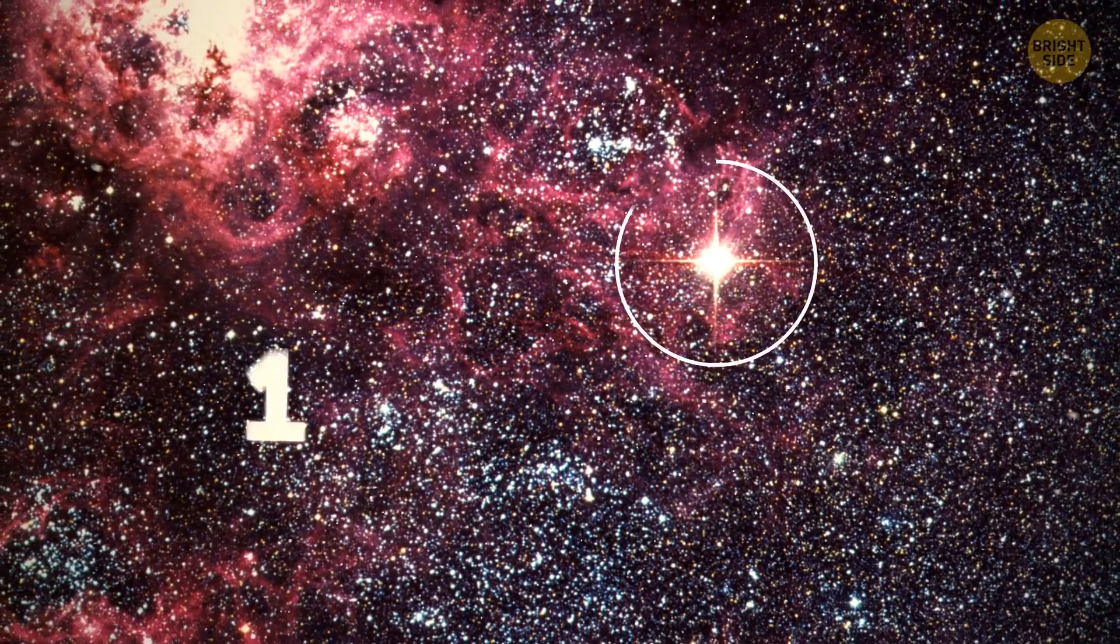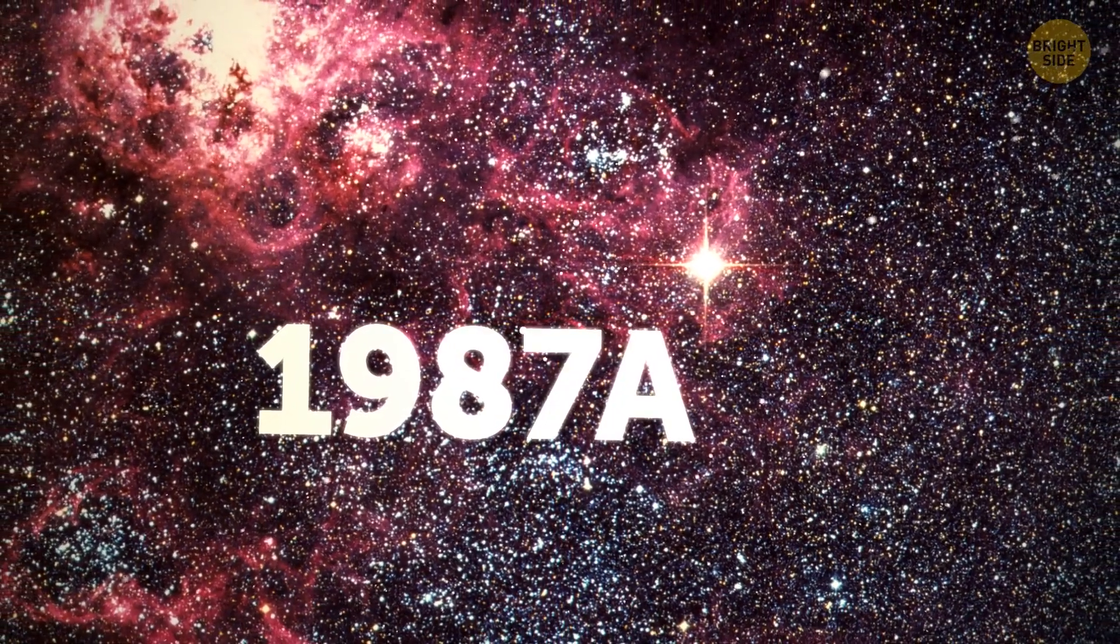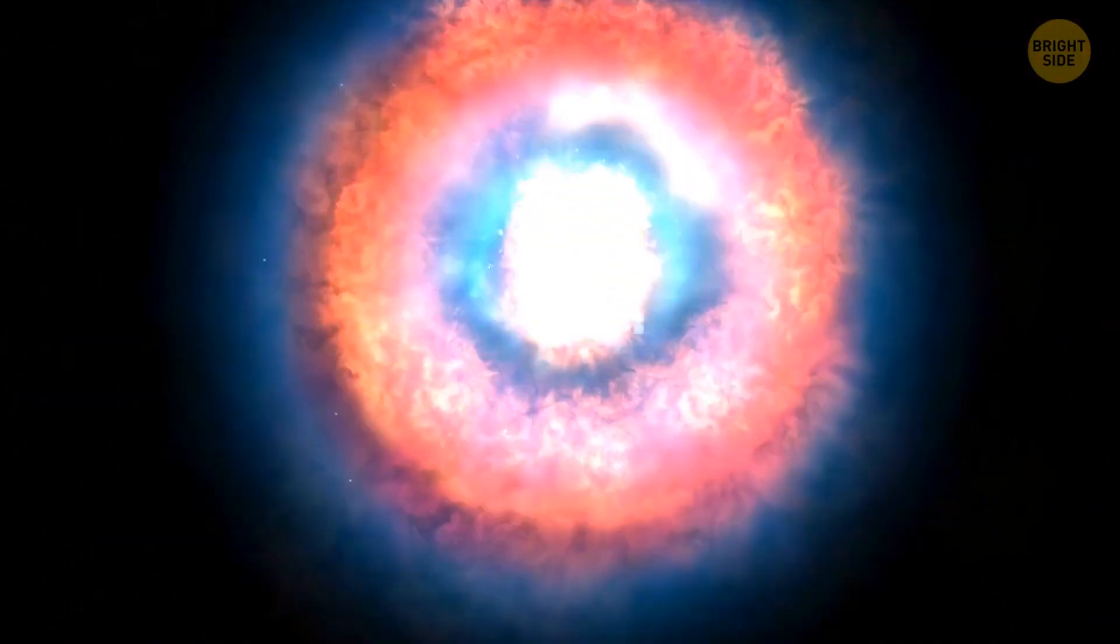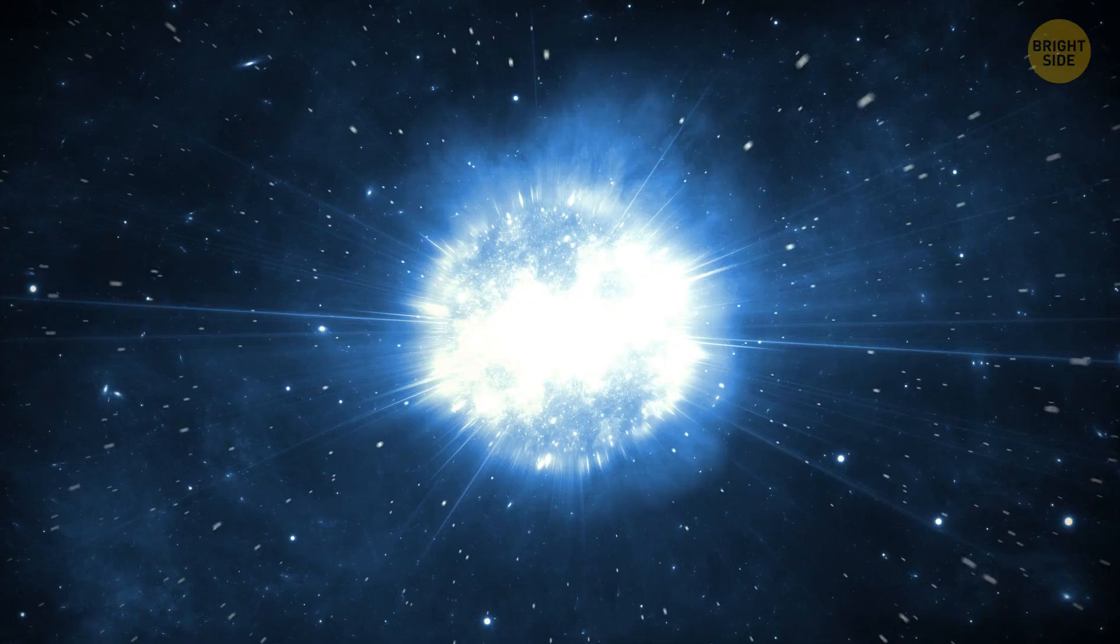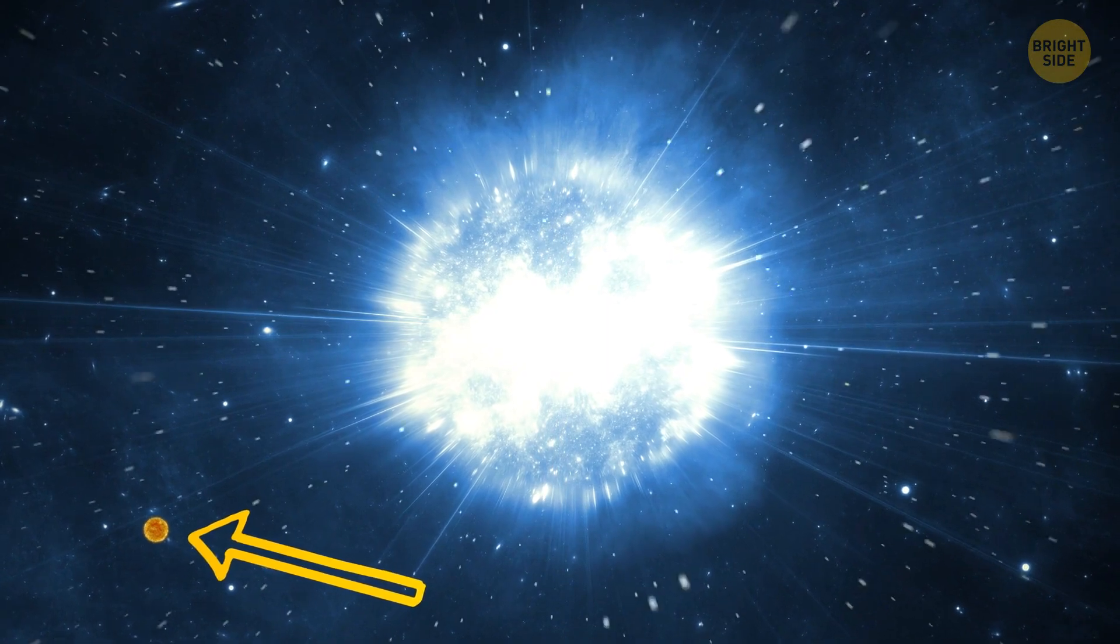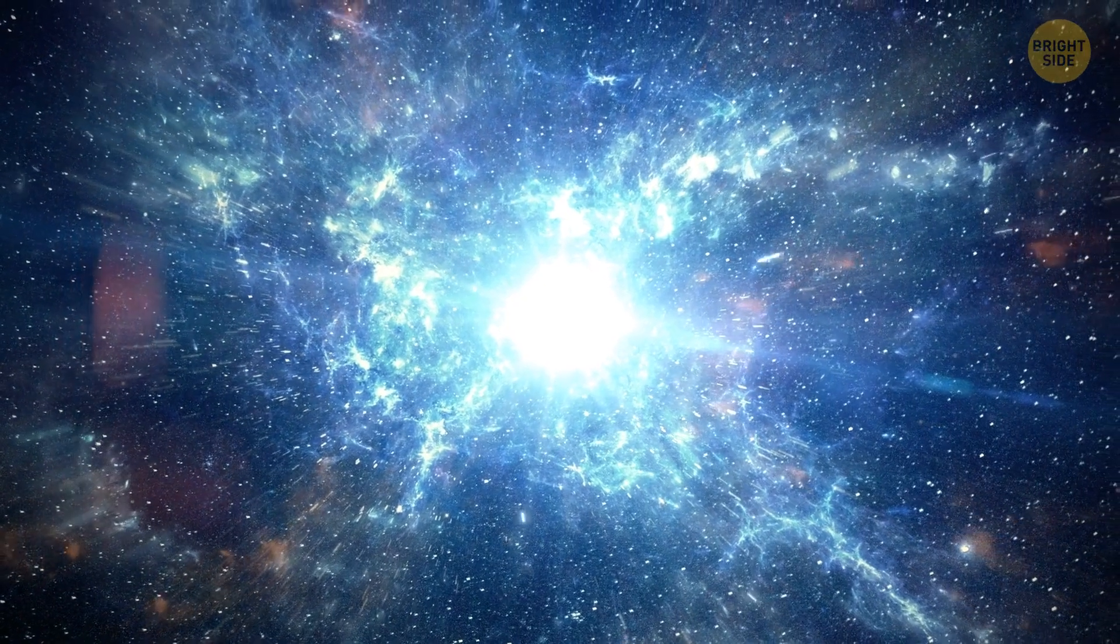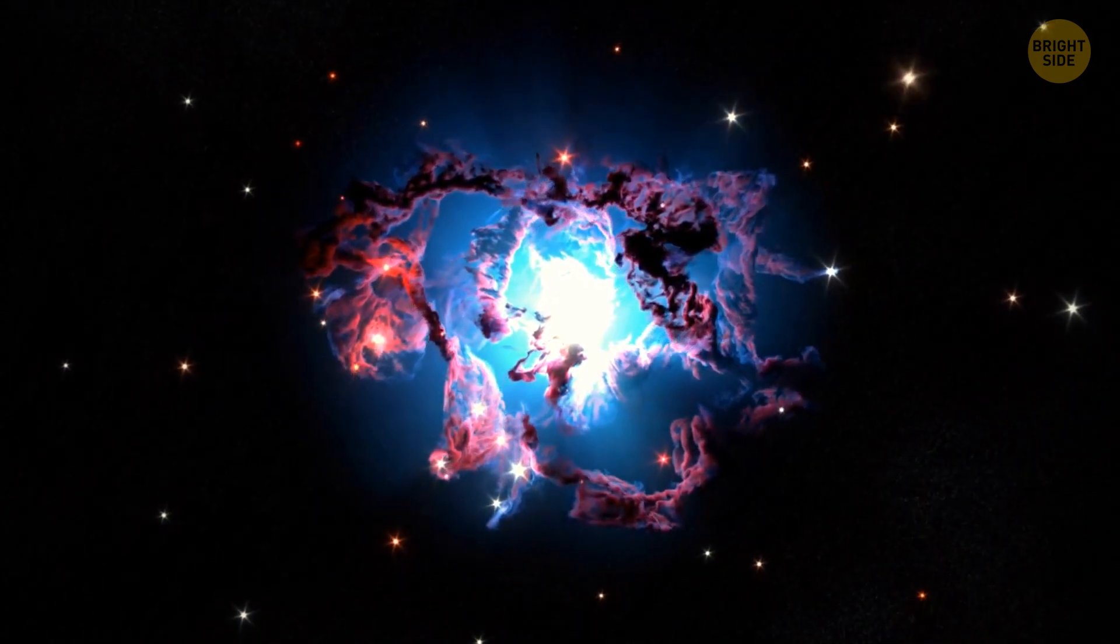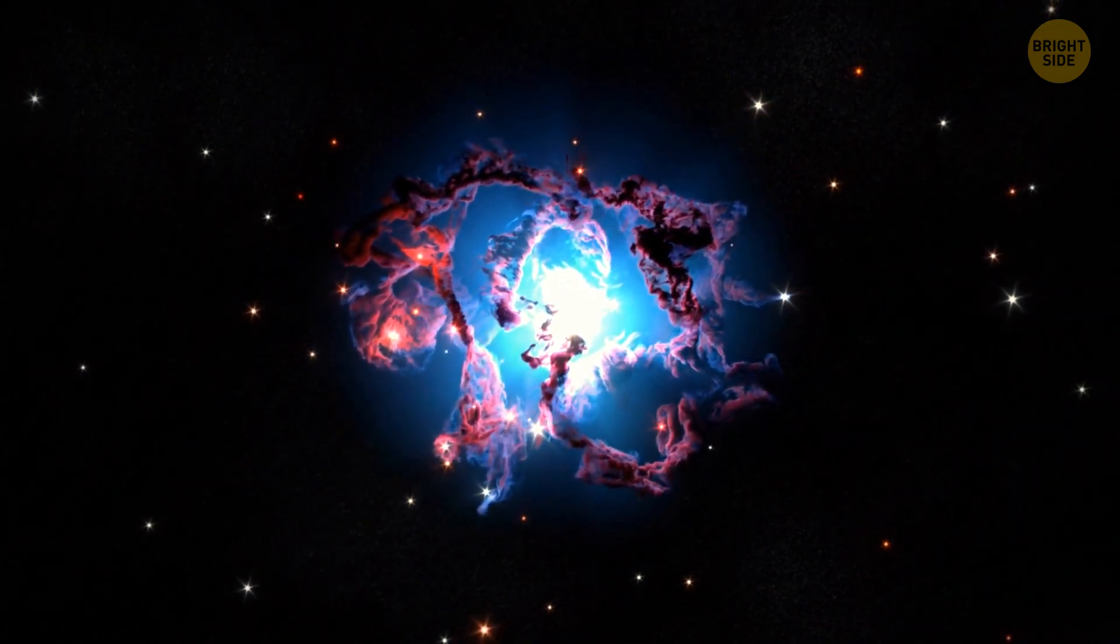You can see Supernova 1987A at about 2 o'clock high. A blue giant star, 100,000 times brighter than the Sun, experienced a core implosion, resulting in a Type II Supernova 100 million times brighter than the Sun. It has left behind a neutron star, clouded in dust and gas, and a wildly spectacular display of fireworks.